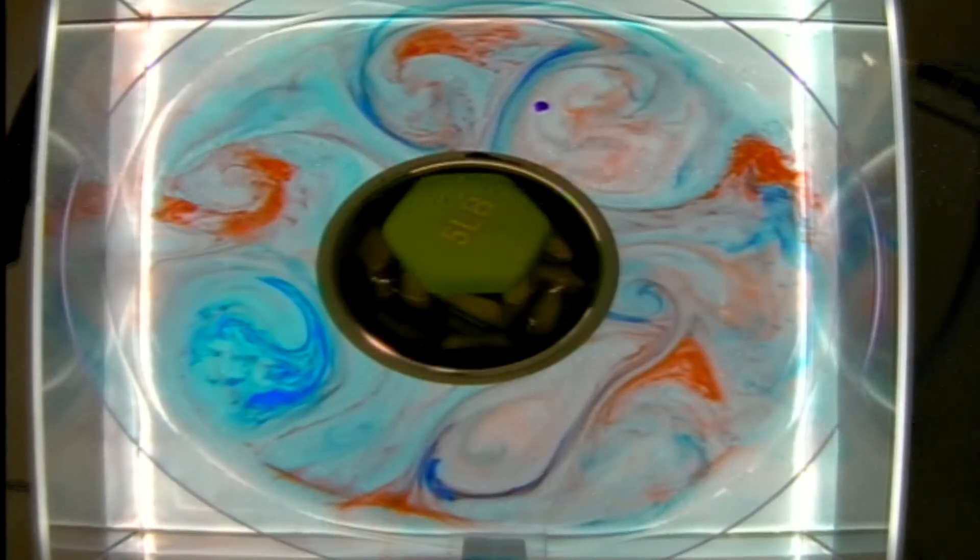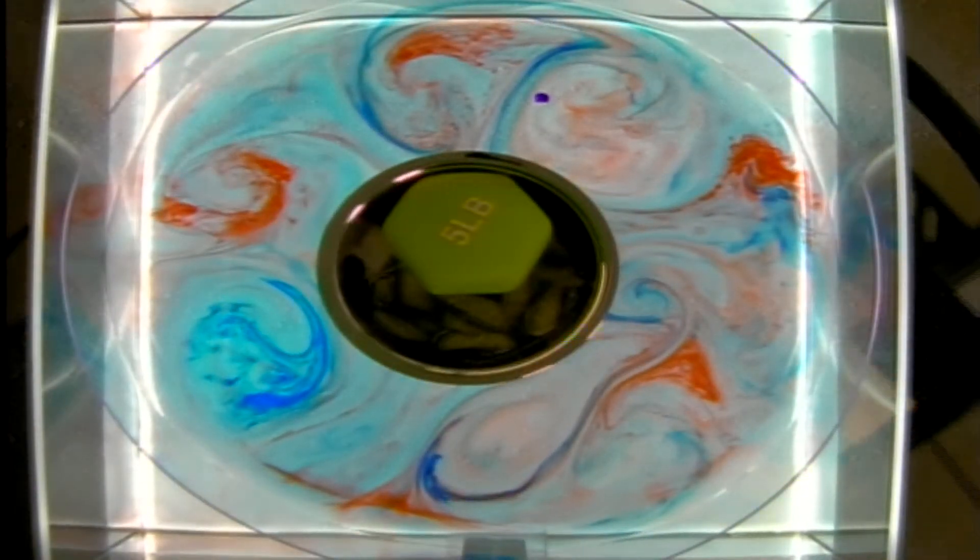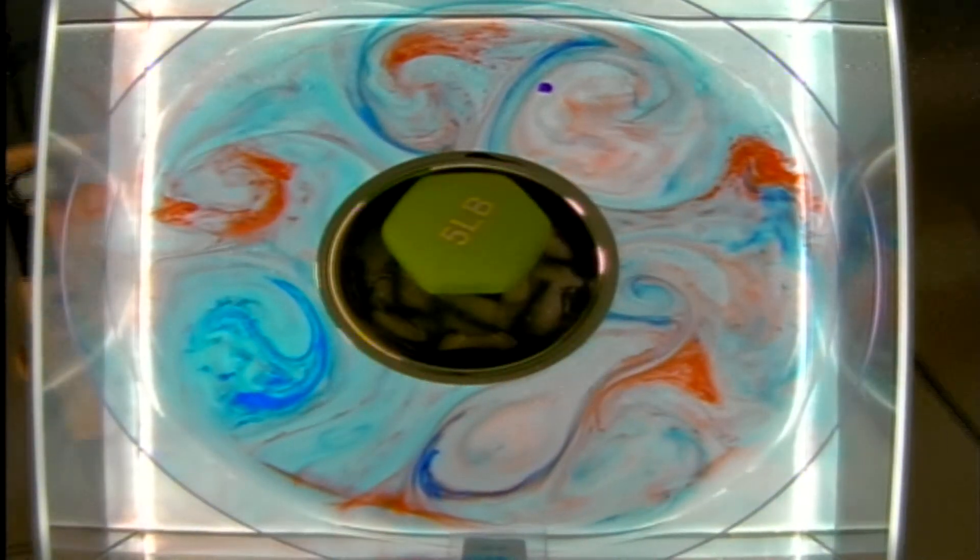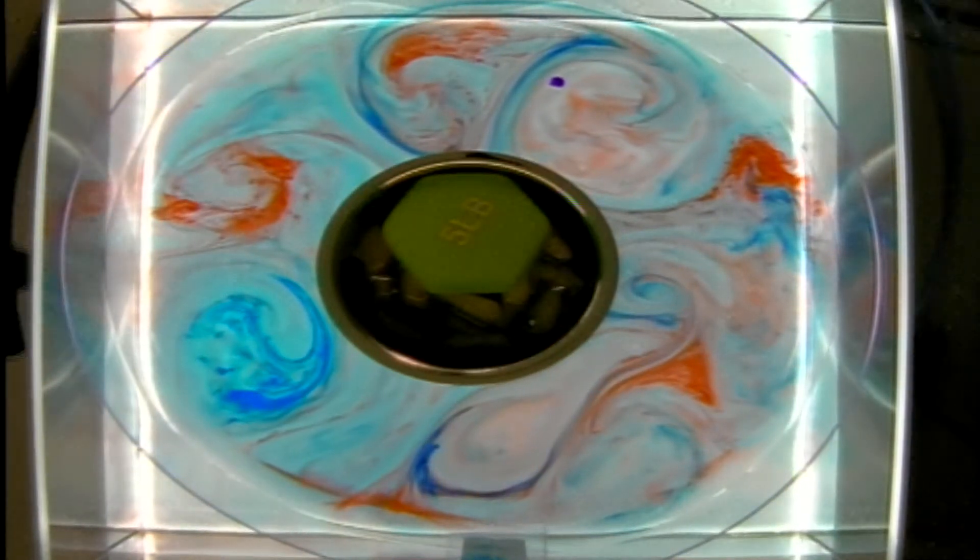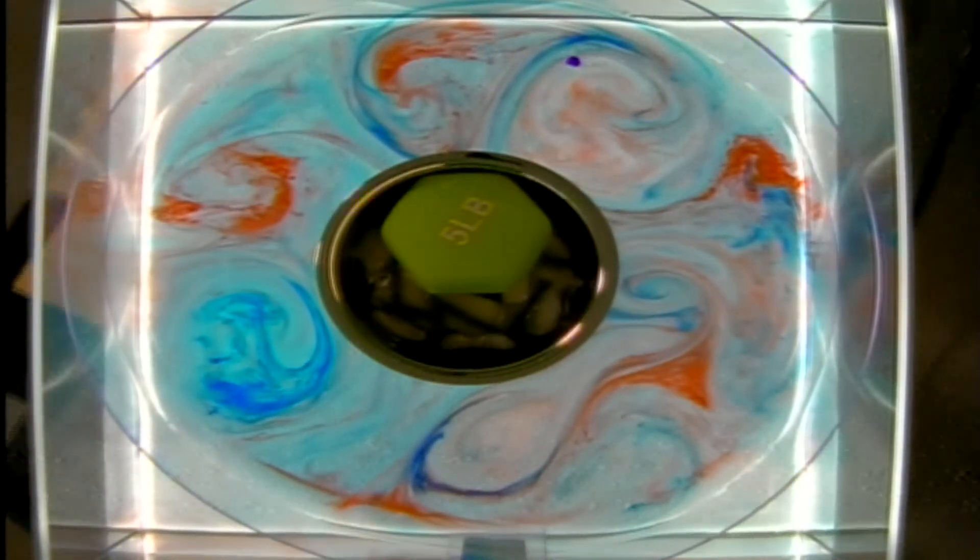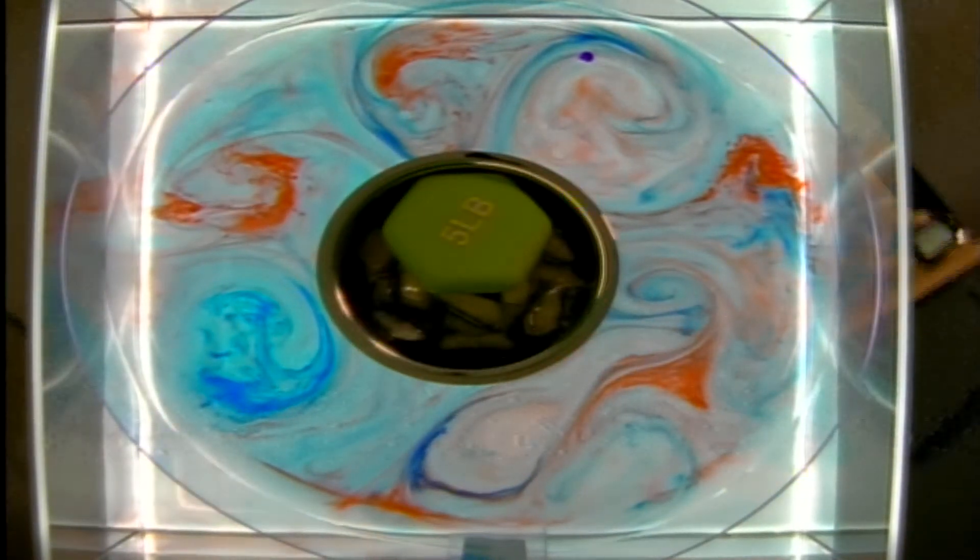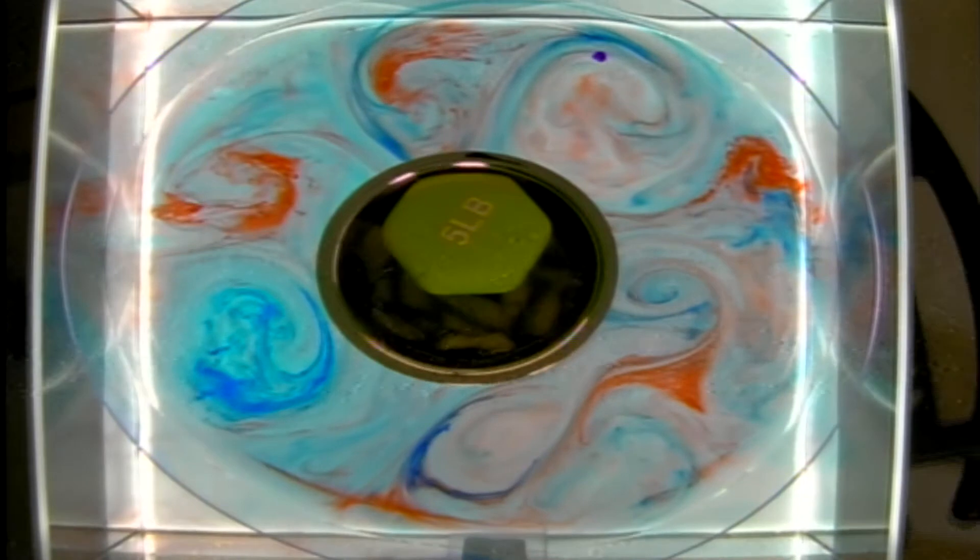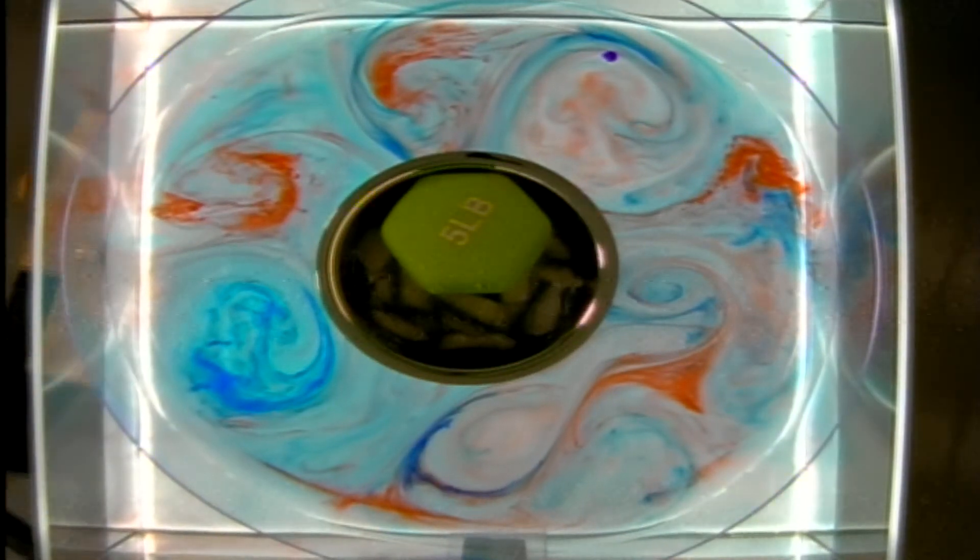We can actually count how many eddies we have and that would give us a typical wavelength for the eddies which we could then match to the theoretical prediction for what the most unstable wavelength is or the fastest growing wavelength of instability would be.